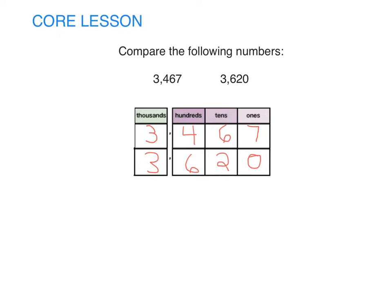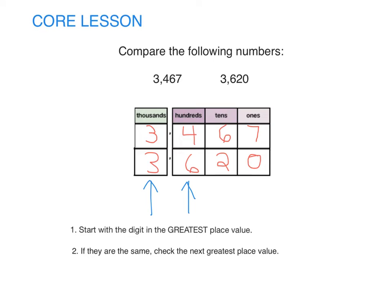What steps do we follow to compare these two numbers? Both of these numbers have threes in the thousands place, so we move over to the hundreds place. Four is less than six, so 3,467 is less than 3,620.